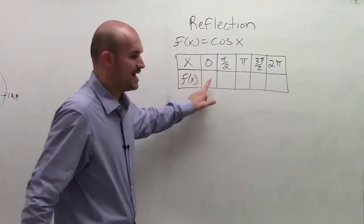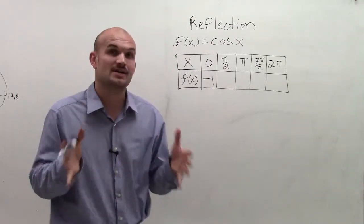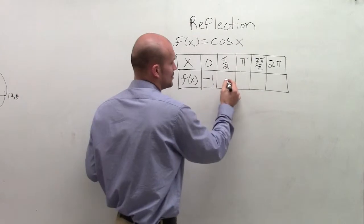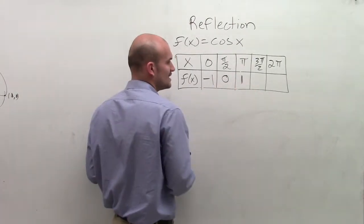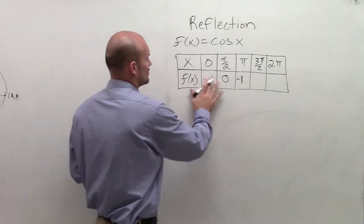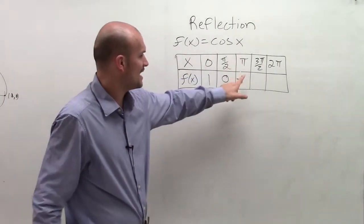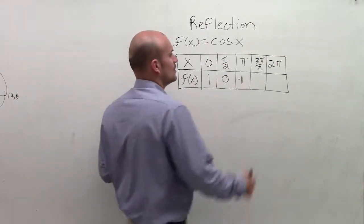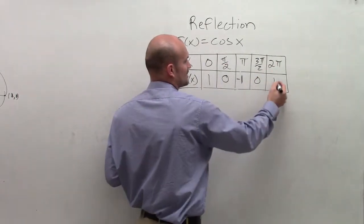At angle 0, cosine is equal to 1. At pi over 2, cosine is 0. At pi, cosine is equal to negative 1. At 3 pi over 2, cosine is 0 again. And at 2 pi, cosine is equal to 1.